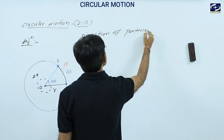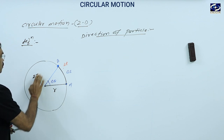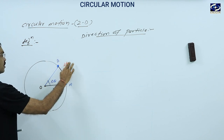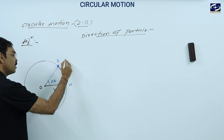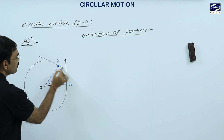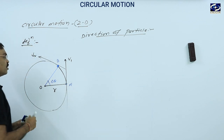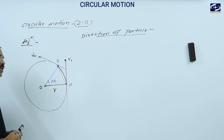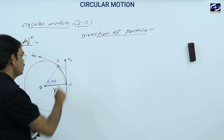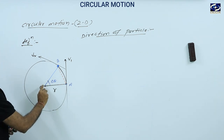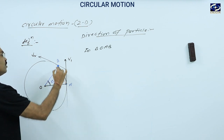This is its first position and this is its second position. I draw two lines — tangents — at both positions. One is here, and the other line is here. Suppose this is V1 and this is V2. Suppose I joined A to B. So at point A, the direction of the body is V1, and at point B it is V2. In triangle OAB, angle equals arc upon radius.